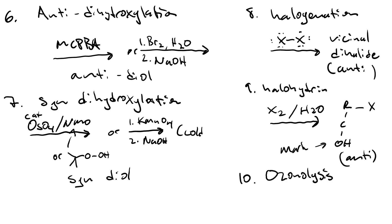Finally, you can cut along a pi bond by doing ozonolysis, first using ozone followed by DMS.